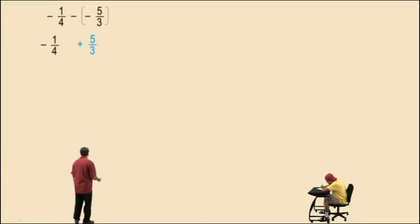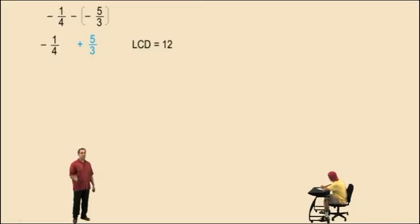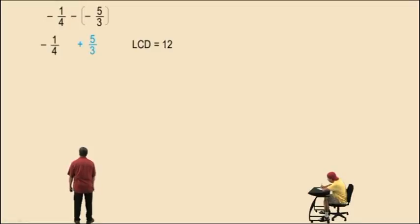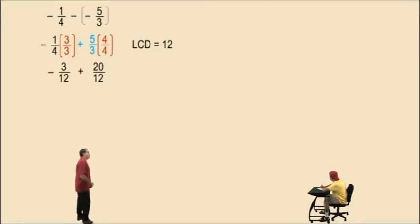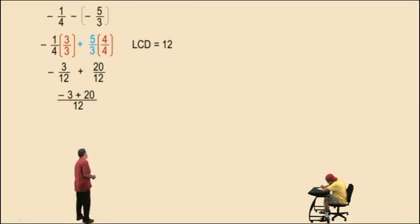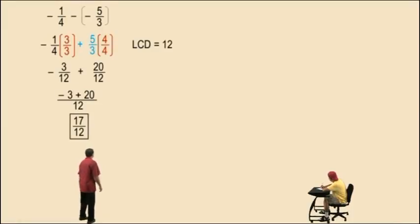Now we need a lowest common denominator. The smallest number that 4 and 3 divide evenly into is 12. Start with 4 — does 4 work? No. How about 8? No, 3 doesn't divide evenly into 8. So try 12 — that works because both 4 and 3 divide evenly into 12. So negative one-fourth, we multiply top and bottom by 3, and five-thirds top and bottom by 4, giving us negative three-twelfths plus twenty-twelfths. Our numerator becomes negative 3 plus 20, denominator stays at 12. Negative 3 plus 20 is 17, so our answer is 17 twelfths.